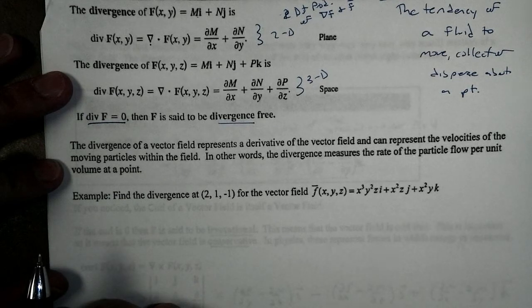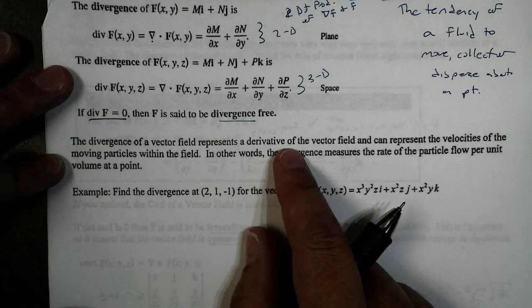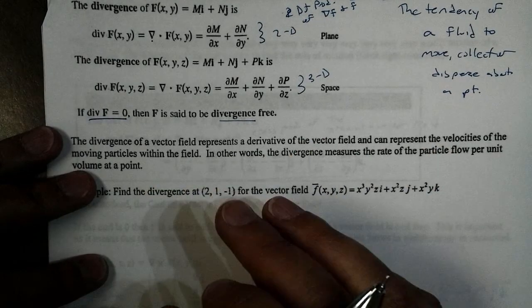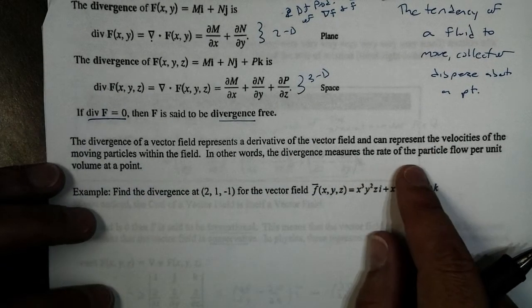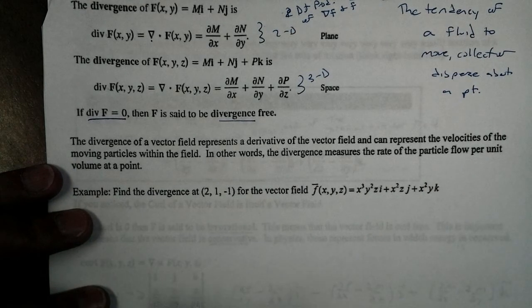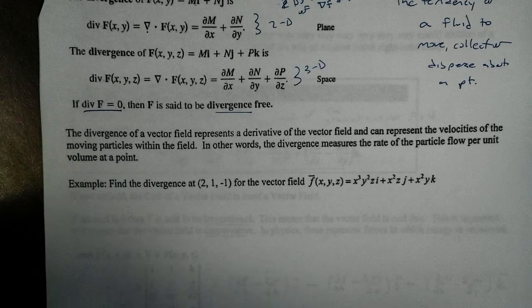The divergence of a vector field represents a derivative of the vector field and can represent the velocities of a particle within the field. In other words, the divergence measures the rate at which a particle will flow per unit volume at a point. So, let's take a look at how we can find the divergence.